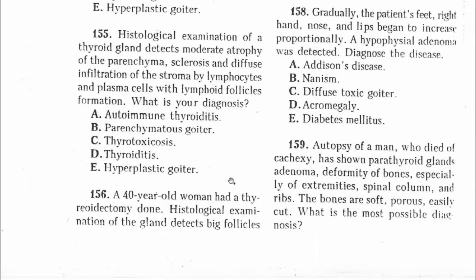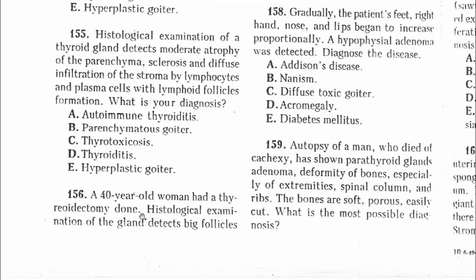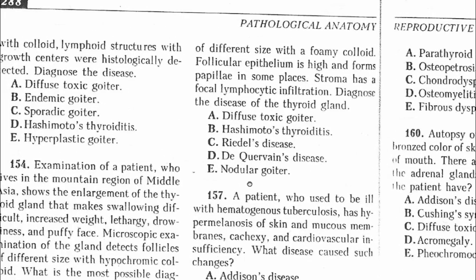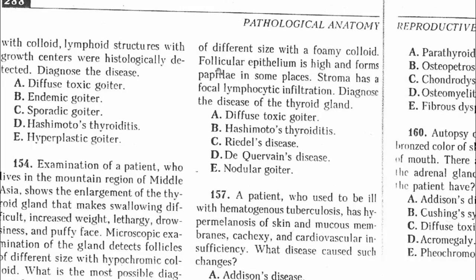Question 156: A 60-year-old woman had a thyroidectomy. Histological examination detects big follicles of different sizes with a foamy colloid; follicular epithelium is high and forms papillae in some places; stroma has focal lymphocytic infiltration. This is typical for diffuse toxic goiter, also known as Graves' disease, characterized by epithelium proliferation with formation of papillae, colloid vacuolization, and lymphoid follicles with germinal centers. The answer is A.